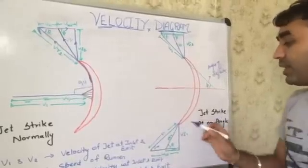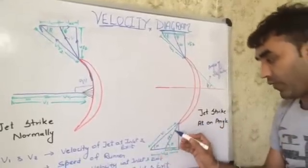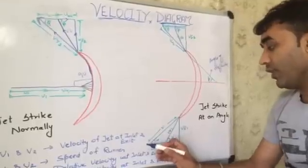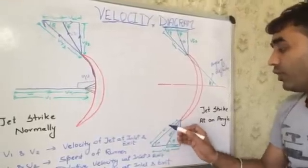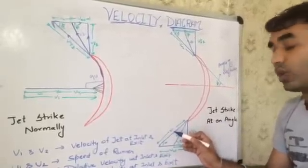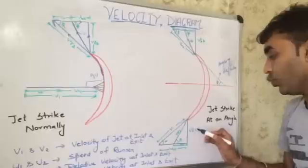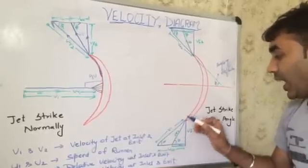But when it strikes with an angle, it is making a curve. It is coming with a velocity V1 which is making an angle of alpha with a whirling velocity. Now, here, V1 is having again two components, Vw1 and Vf1. It is making an angle theta with the help of Vr2.